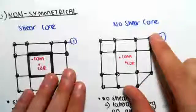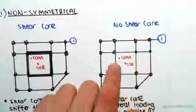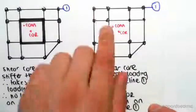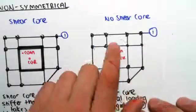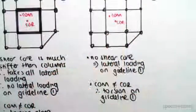The second case is when we don't have a shear core. It's non-symmetrical and no shear core like this. There's no shear core, which means that the columns have to take the lateral loading. So there is lateral loading along grid line one. Not only do we have lateral loading, but also our center of mass is not equal to our center of rigidity.